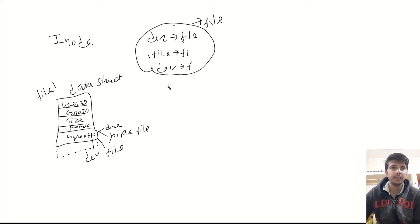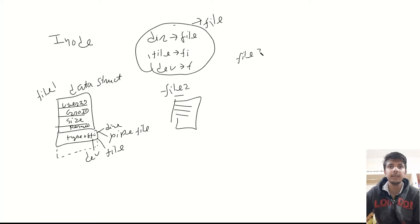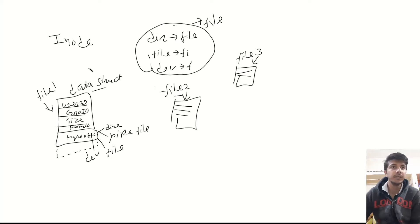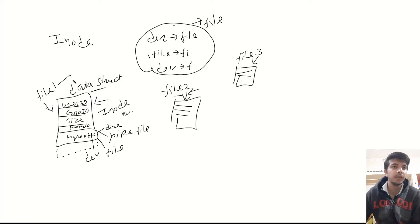Let's say for file 1, this is the data structure. Then there will be another file, and for that there will be another data structure which has various information regarding that particular file. Similarly, for another file in Linux, there will be another data structure associated to that file. To identify each data structure uniquely, a unique number is given to every data structure, and that unique number is known as the inode number. We can say that the inode number is the unique number that identifies the unique data structure, and that data structure has information about a unique file. Each file in Linux has an inode number associated with it.